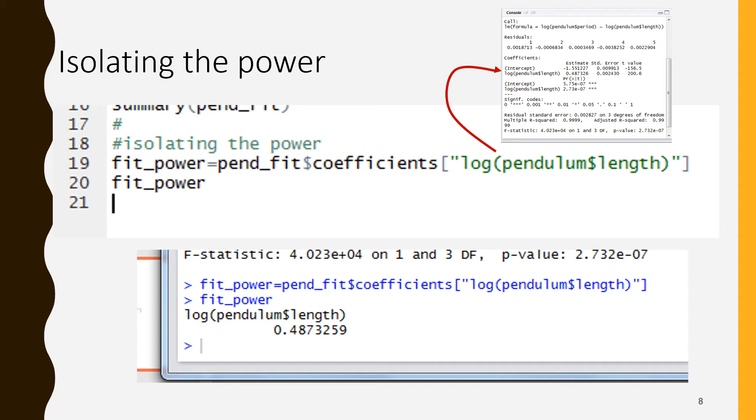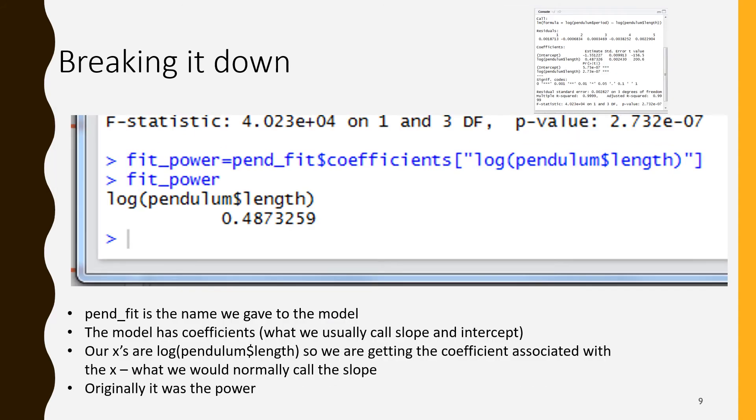Again, pendulum_fit is the linear model. It has one part of it is the coefficients so pend_fit dollar sign coefficients. Coefficients was a vector so square bracket. The elements of the vector are named and the particular name we're interested in is log parentheses pendulum dollar sign length close parentheses. Pend_fit is the name of the linear model. It has coefficients we usually refer to as the slope and the intercept. The power is related to what we would normally call the slope. We want what was our x value and our x value in this case was log of pendulum dollar sign length. We are getting that slope, that coefficient, and that is the power.